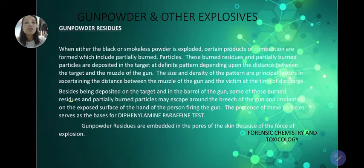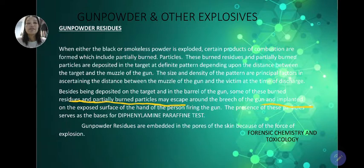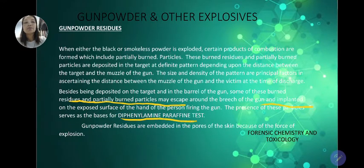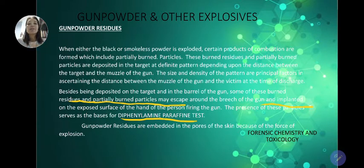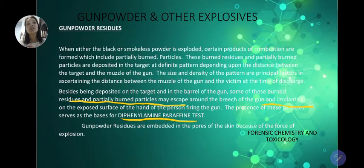Residues and partially burned particles that escape from the bridge of the gun are usually recovered and tested during paraffin examination. We use diphenyl amine reagent to determine the presence of gunpowder residue in the hands of a subject suspected of firing a gun. Gunpowder residues are embedded in the pores of the skin because of the force of explosion, which is why we use molten paraffin wax — it is melted, cooled slightly, and applied to the subject's hand while still hot.